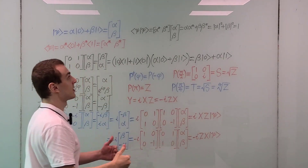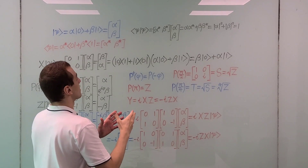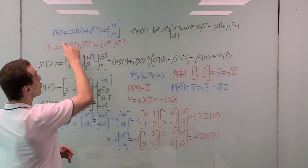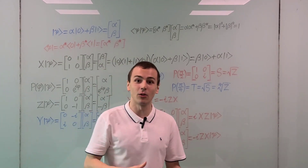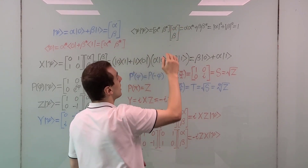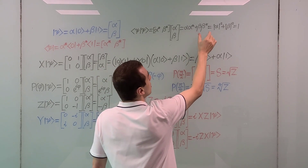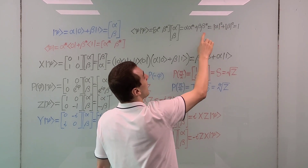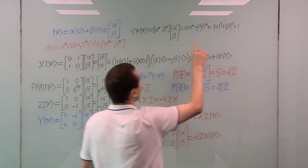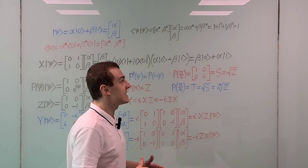The Hermitian adjoint involves doing two things: you have to take the transpose, and you also have to take the complex conjugate of all the entries. Now that we have the ket and bra versions of a general qubit state, we can take the inner product of the state with itself. We can write this as a matrix product — a row vector times a column vector — which gives us the sum of the absolute value of alpha squared and the absolute value of beta squared. We want to impose the normalization condition: this sum must equal one, meaning the state is normalized.